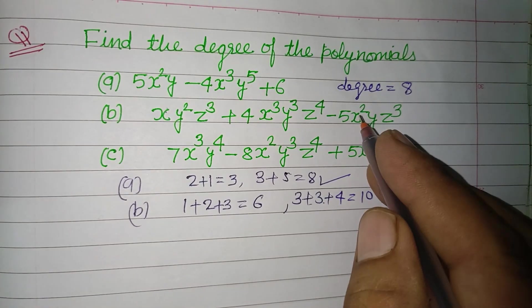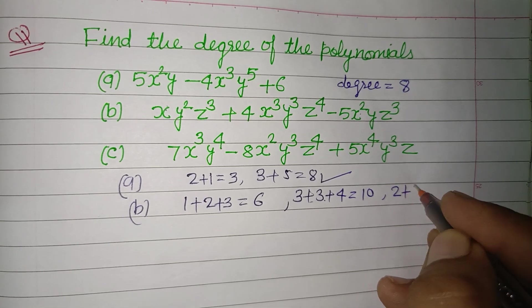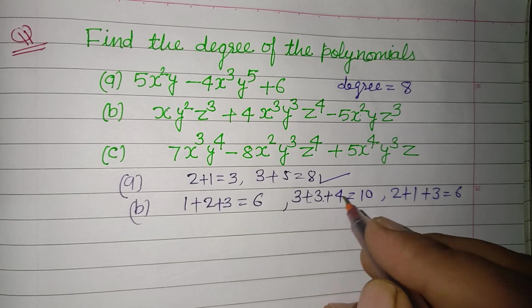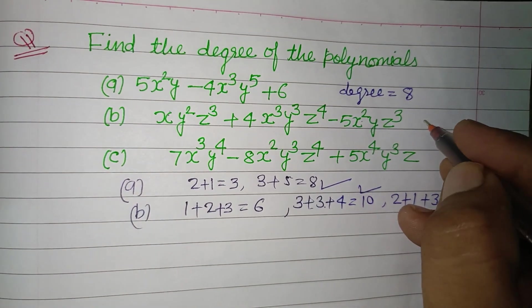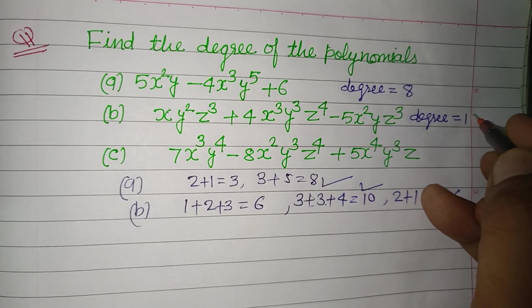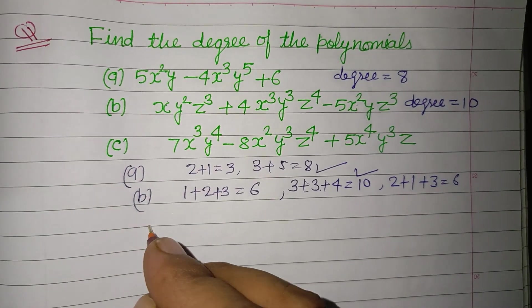And third term powers are 2 plus 1 plus 3. This is 6, so greatest power is 10. Therefore degree of this polynomial is 10.